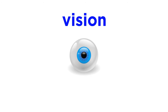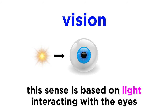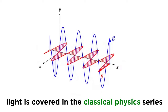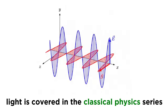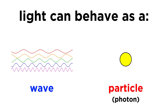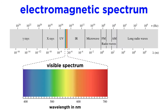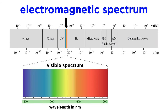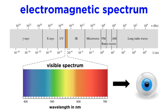Vision is based on light interacting with the eyes. Let's begin with the knowledge that light can behave either as a wave or as a particle, which is called a photon. What we refer to as visible light is actually electromagnetic radiation, just like microwaves, radio waves, x-rays, and all the rest. It just happens to have a wavelength between about 400 and 700 nanometers. This is the portion of the electromagnetic spectrum that we have evolved the ability to perceive.